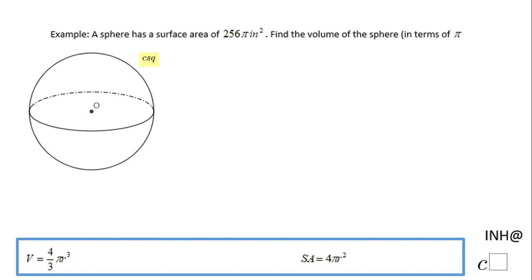Welcome back to Math at C Square. In this example we have a sphere with a surface area of 256π square inches, and we need to find the volume of this sphere.